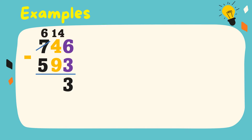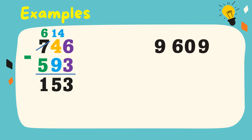And 4 becomes 14. 14 minus 9 is equal to 5. 6 minus 5 is equal to 1. The difference is equal to 153.